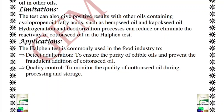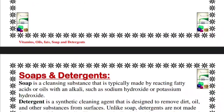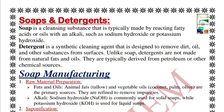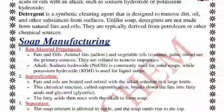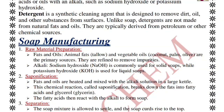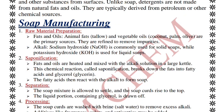For soaps and detergents: soap is made up of salts of fatty acids or oils with an alkali, while detergent is a synthetic cleaning agent typically derived from petroleum or other chemical sources. Soap manufacturing involves raw material preparation — refining fats, oils, and alkali — followed by saponification, where fats and oils are heated with alkali solution, breaking them into fatty acids and glycerol, which then react with alkali to form soap.